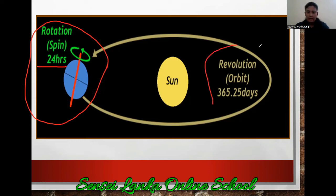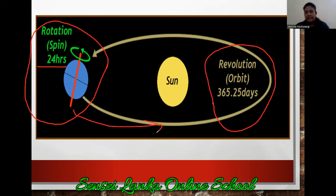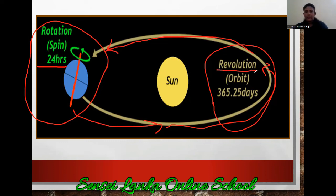Then look at this yellow color one — revolution. What is that? While going around itself, the earth is going around the sun. How long does it take for a complete revolution?